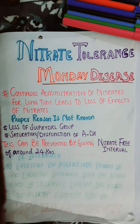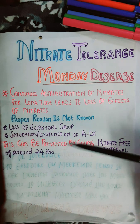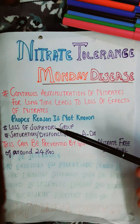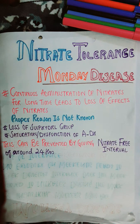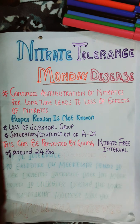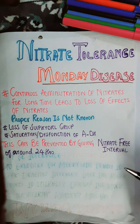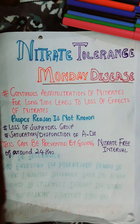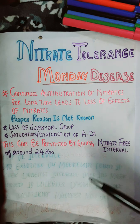The exact mechanism is not yet fully discovered — it is still a mystery. Some researchers propose that nitrate tolerance is due to loss of sulfhydryl groups. These sulfhydryl groups are required for the vasodilatory effect, meaning vascular smooth muscle relaxation. When we give nitrates continuously for a longer time, there is loss of sulfhydryl groups.